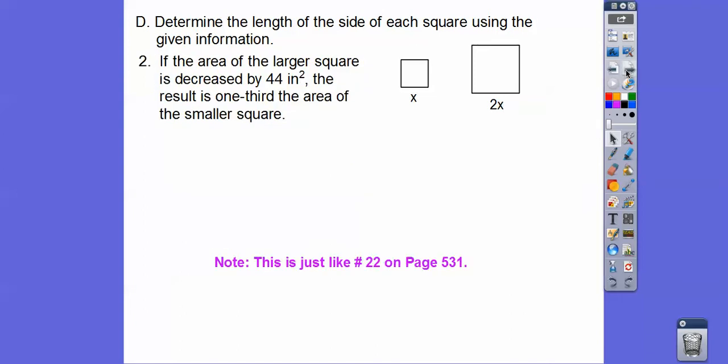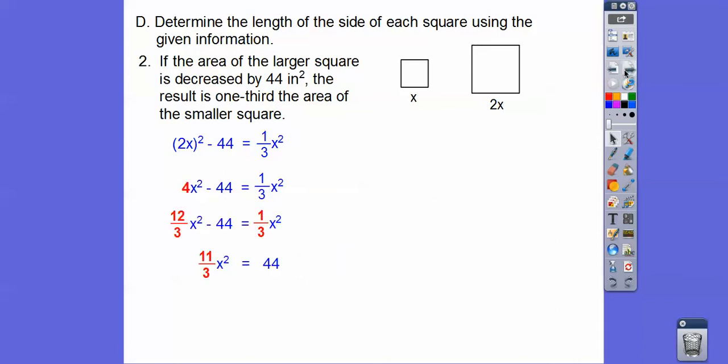This one is just like the next one, number 22, so you'll follow the same steps, just different numbers. It says if the area of the larger square is decreased by, decreased by means minus 44. So we're going to take this area and subtract 44, and the result is going to be one-third this area, so one-third x squared. So square them out. Now we've got to subtract one-third x squared, so I'm going to change 4x squared to 12-thirds x squared. Then we can subtract one-third x squared, and we get 11-thirds x squared. This 4 is 12-thirds, and when we subtract one-third, we get 11-thirds.